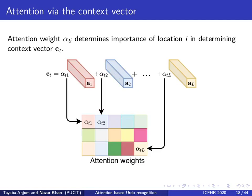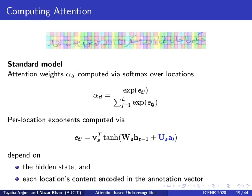The attention weights α_{t,i} determine the image context in which the decision for the output character at time t will be made. They can be computed as probability values by taking a softmax over all locations, where the softmax exponent for a location depends on the hidden state and that location's content encoded in the annotation vector.